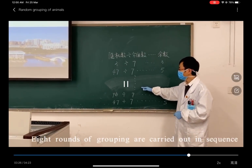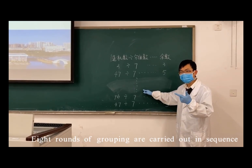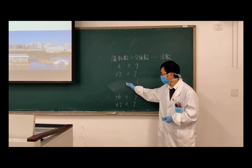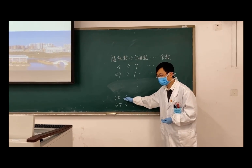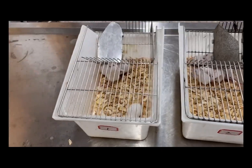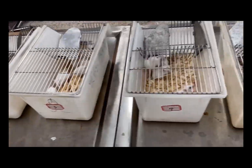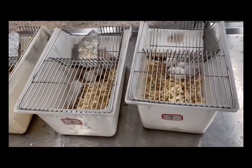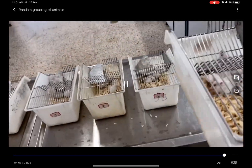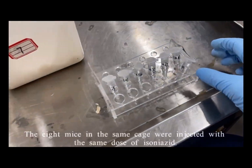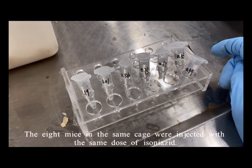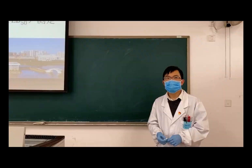According to this method, 8 rounds of grouping are carried out in sequence. Finally, there are 8 mice in each cage. Each group of students took 1 cage of mice and 1 dose of Izaniozard. The 8 mice in the same cage were injected with the same dose of Izaniozard.